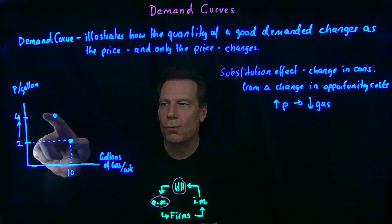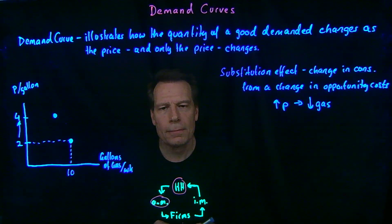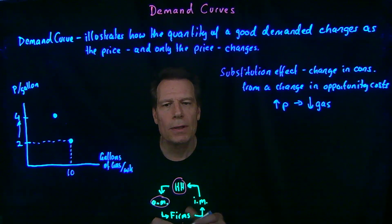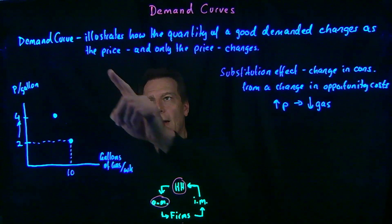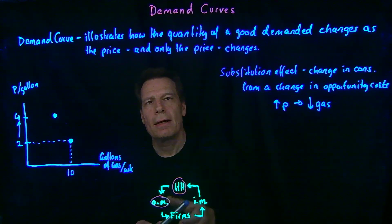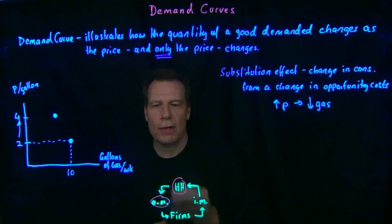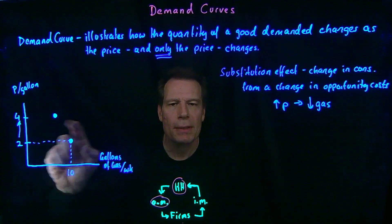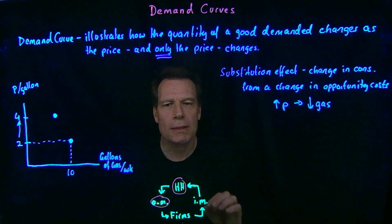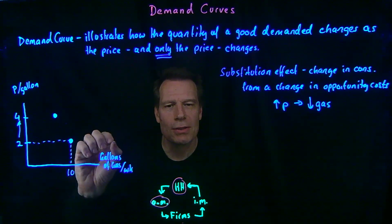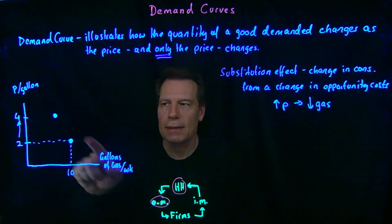You're going to end up at some lower point when the price is $4 per gallon. Now, is this a point on your demand curve? Let's look back at the definition: a demand curve illustrates how the quantity of a good demanded changes as the price and only the price changes. Well, to get to this point the price changed, but something else changed too — your parents sent you $20 a week extra. So this is not a point on your demand curve, because something else is also changing.